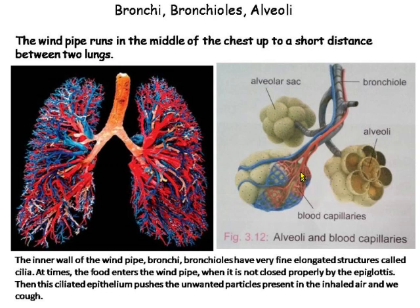These alveoli are richly supplied with blood capillaries. The blood in the blood capillaries absorbs the oxygen in the air and releases carbon dioxide to the alveoli. Then from the alveoli, the carbon dioxide goes to the bronchioles, then to the bronchi, then the windpipe, larynx, then pharynx, and then nasal cavity, and from the nose it is thrown out of the body when we breathe out.